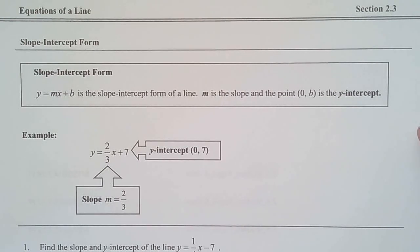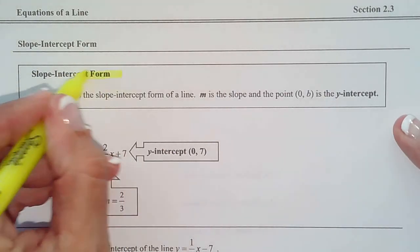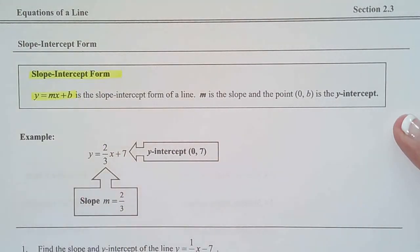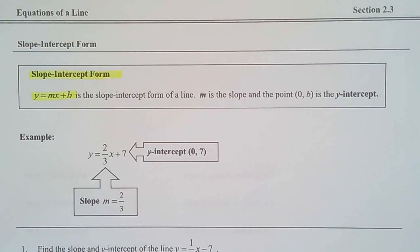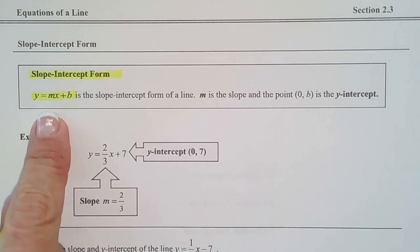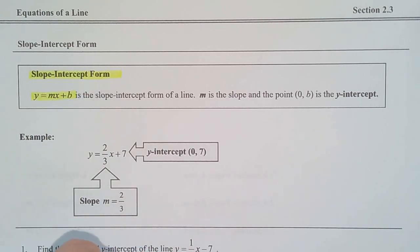So, slope-intercept form, this is definitely another highlighter moment, is y equals mx plus b. And if I could pick one thing that students remember more from high school than anything else, it would be y equals mx plus b. They don't really know what it means sometimes, but they remember that formula, y equals mx plus b. So, it's called the slope-intercept form for a reason